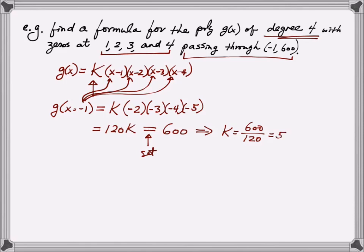And that is telling me that my polynomial g has to be 5 times x-1, x-2, x-3, and x-4. Occasionally, you might want to multiply this out, but I don't see any reason why at this point, this is a perfectly fine answer, and that's it.